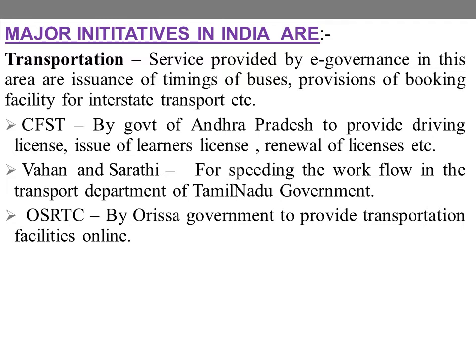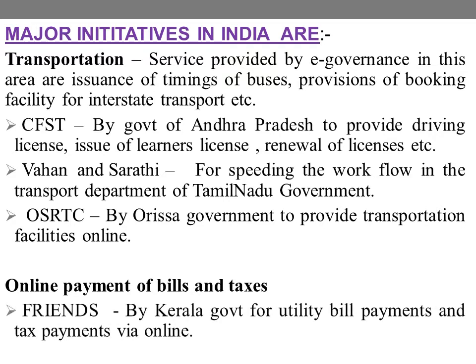Next is online payment of bills and taxes. Bills and taxes can be paid online through e-governance initiatives. FRIENDS stands for Fast, Reliable, Instant, Effective Network for Distribution of Services. It is an initiative introduced by the Kerala government for utility bill payments and tax payments via online.